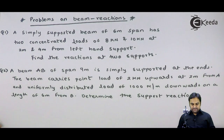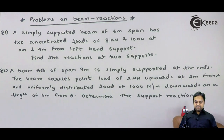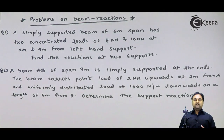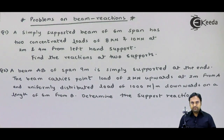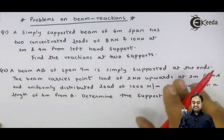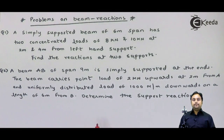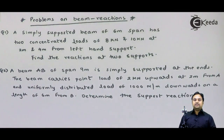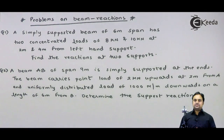Let us take the next heading: problems on beam reactions. This part of beam reactions is included in the chapter of equilibrium. We would be solving these beam reactions considering the beam to be in equilibrium — meaning the beam would be in a stable condition with no disturbances acting on it.